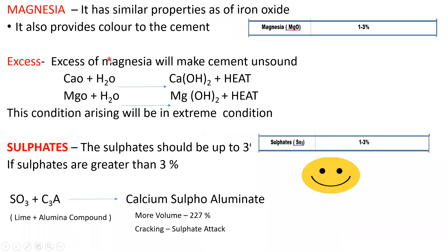Magnesia has the same properties as iron oxide. The proportion of magnesia should be kept between 1 to 3 percent, and it also provides color to the cement. Just like excess lime caused unsoundness, excess magnesia will also make the cement unsound. If more than 3 percent magnesia is added, it reacts with water to form magnesium hydroxide, and heat is evolved. This magnesium hydroxide increases the volume of cement.